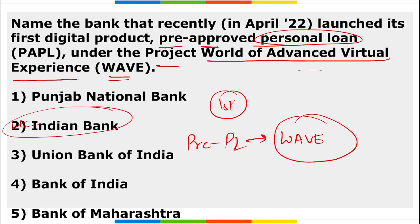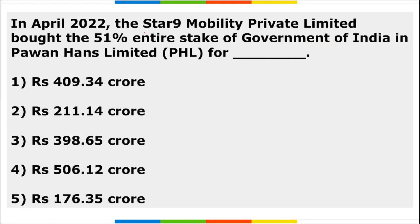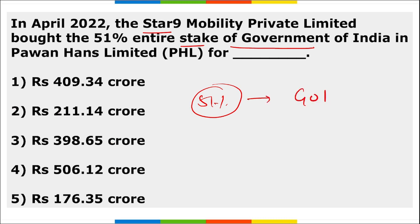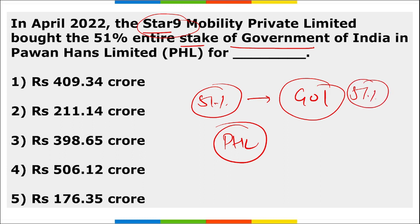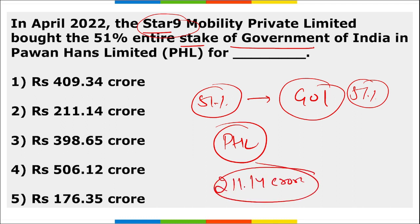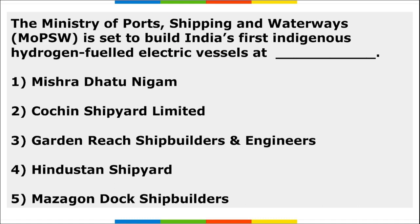Star 9 Mobility Private Limited purchased the entire 51% stake of the Government of India in Power Hunts Limited for an amount of ₹211.14 crore.